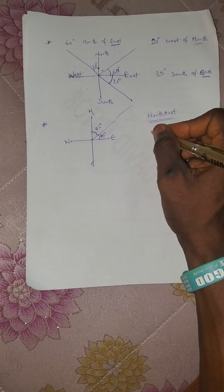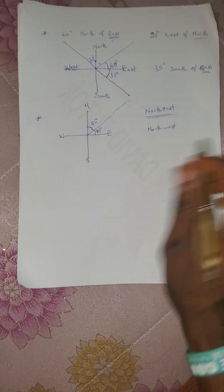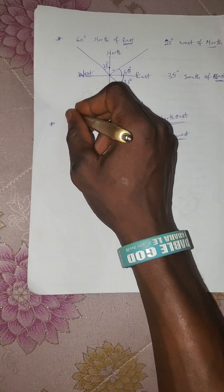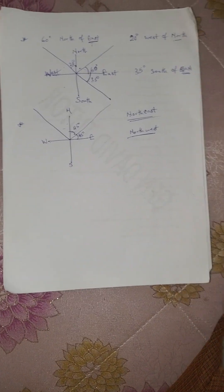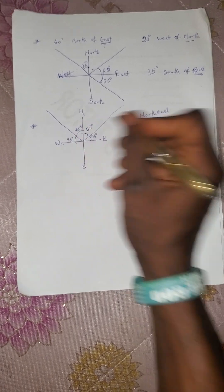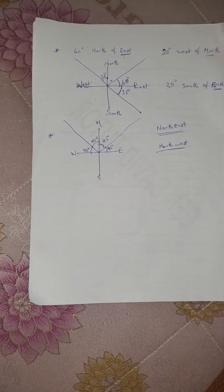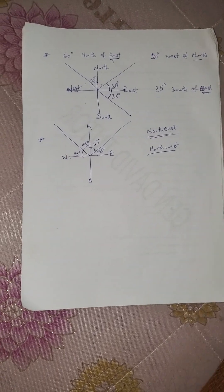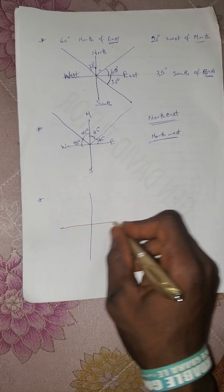Similarly, if you are given 'northwest' written together, this is in between north and west. Because they are attached and no angle is given, this is also 45 degrees and 45 degrees. Both will contain equal angles, meaning the direction is at the middle of that quadrant. That is the second case.